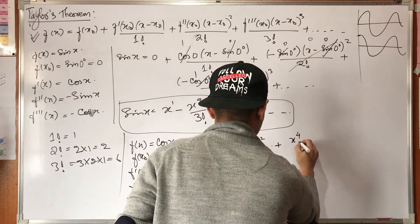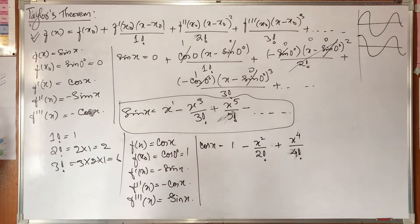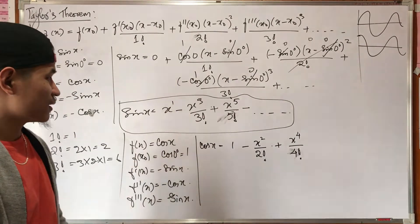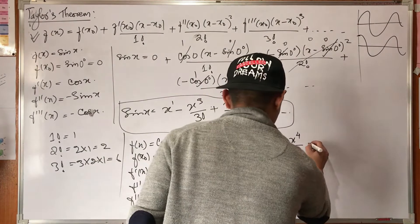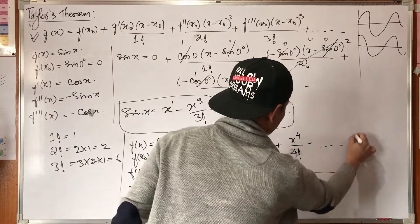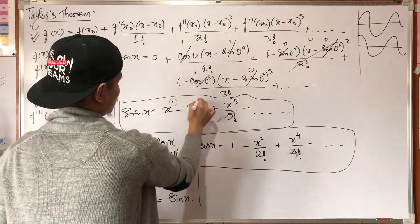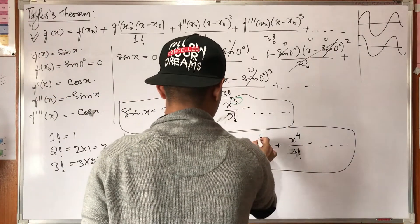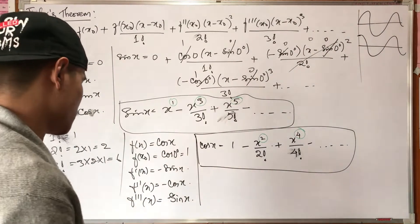Next is x to the power 4 over 4 factorial. We write x to the power 4 over 4 factorial, continuing the cos x Taylor series. We can also write x to the power 5 term. We know x to the power 3 also appears.